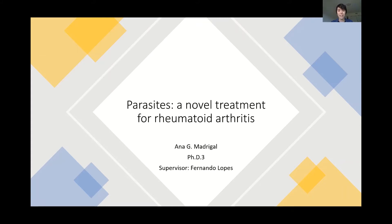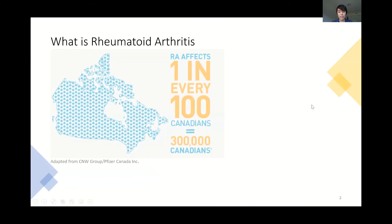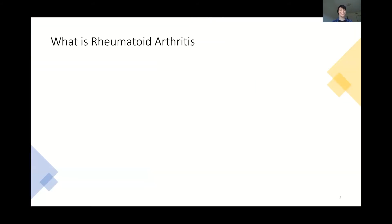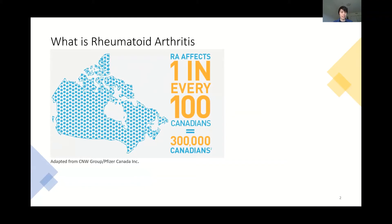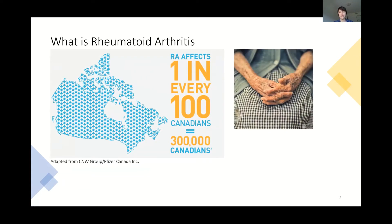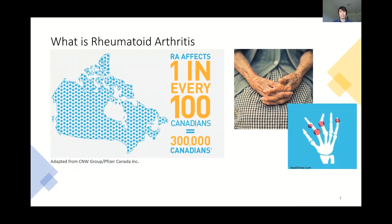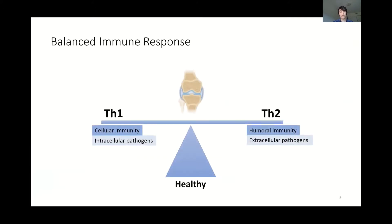So what is rheumatoid arthritis? It affects one percent of the world and has a very high incidence in Canada, affecting one in every hundred Canadians. It is characterized by a lot of pain and inflammation of the joint, stopping people from normal day activities, and there are no current optimal therapies available.